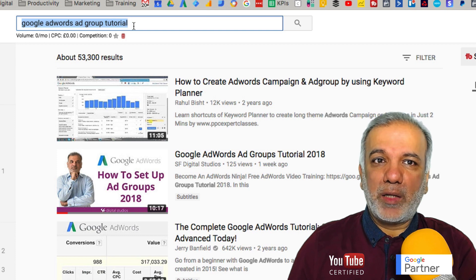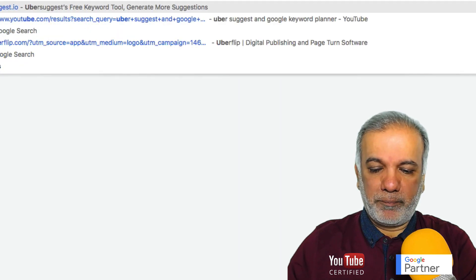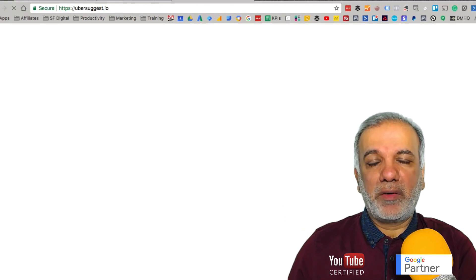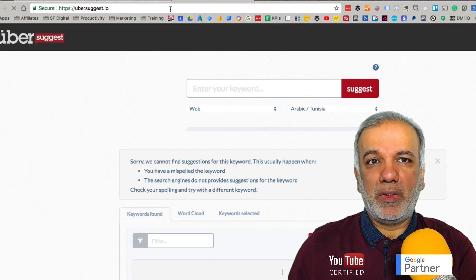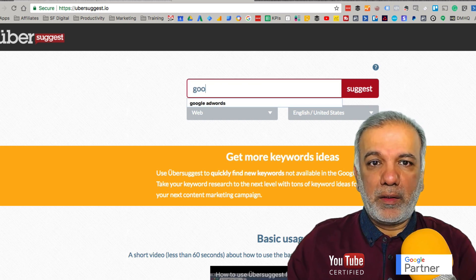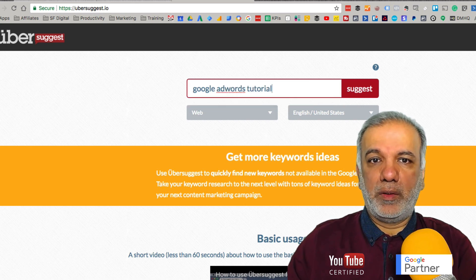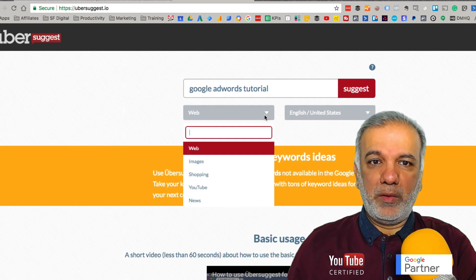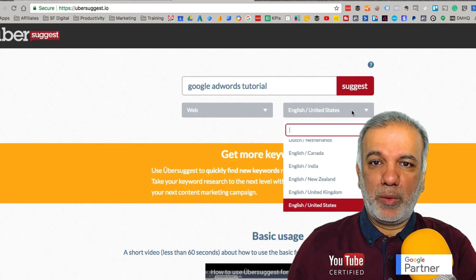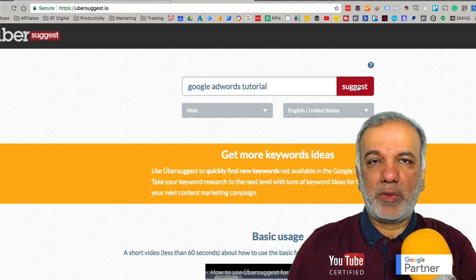Okay, so the tool which I recommend to find long tail keywords is called Ubersuggest. Ubersuggest.io. It's a great tool and it's going to give you a ton of keywords. So if I were to go in there and put in Google Adwords tutorial. Now in here you've got an option for web, images, shopping, YouTube, or news. I'm going to choose web. You can also select the country. I'm going to keep it US because that's where the most traffic is. Click suggest.